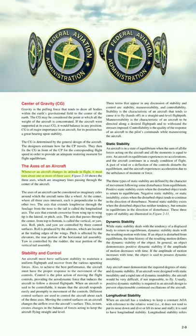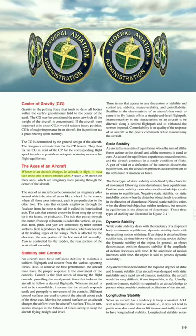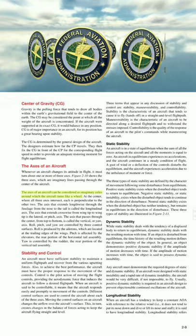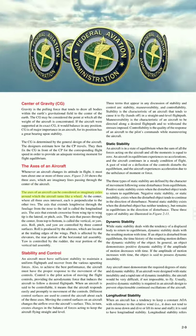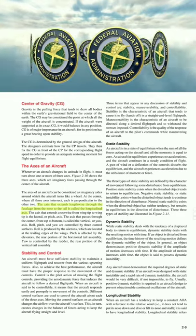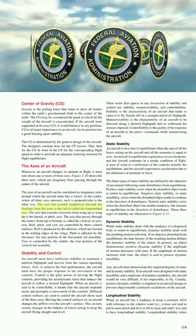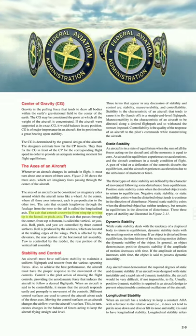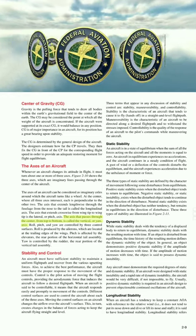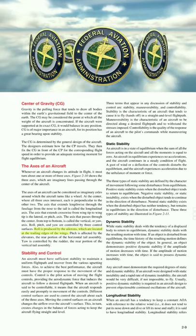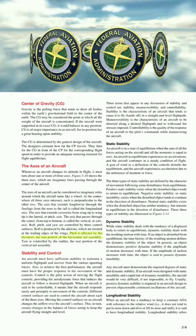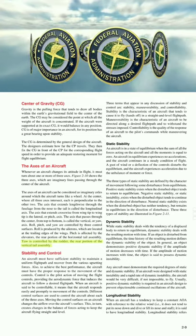The axis of an aircraft. Whenever an aircraft changes its attitude in flight, it must turn about one or more of three axes — imaginary lines passing through the center of the aircraft, each perpendicular to the other two. The axis that extends lengthwise through the fuselage from nose to tail is the longitudinal axis. The axis that extends crosswise from wing tip to wing tip is the lateral, or pitch, axis. The axis that passes through the center from top to bottom is called the vertical, or yaw, axis. Roll, pitch, and yaw are controlled by three control surfaces: roll is produced by the ailerons at the trailing edges of the wings; pitch is affected by the elevators, the rear portion of the horizontal tail assembly; and yaw is controlled by the rudder, the rear portion of the vertical tail assembly.